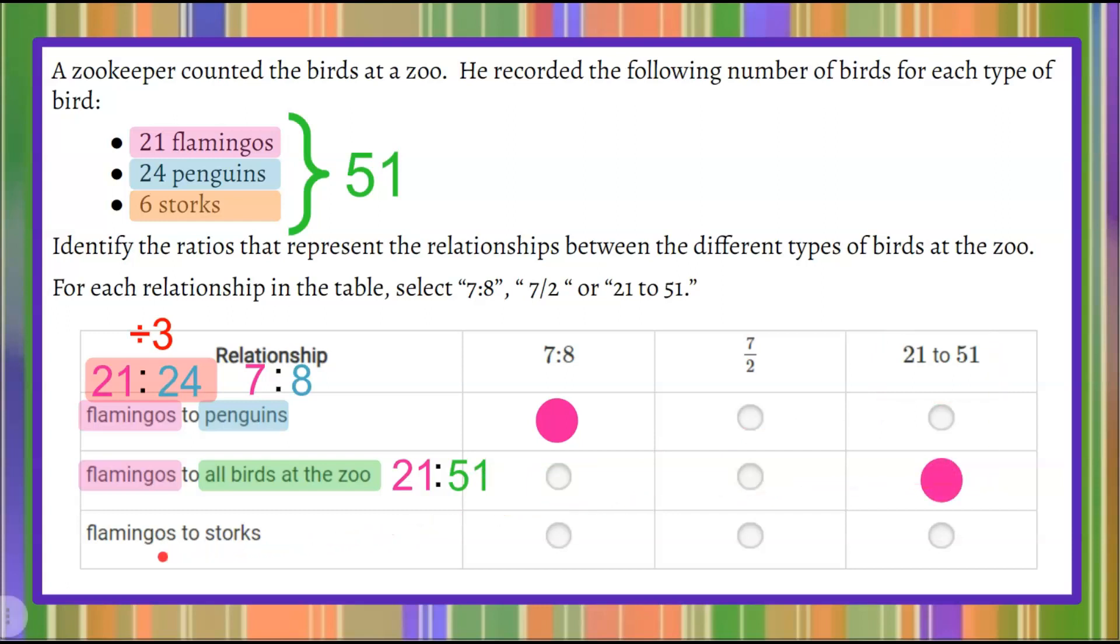And our third one, we have flamingos to storks. We have 21 flamingos and we have 6 storks. So understanding that sometimes the number that follows may be smaller, we have to follow the order in which the ratio was given to us. Noticing that 21 to 6 is not present in this table because these are both, again, divisible by 3. 21 divided by 3 is 7. 6 divided by 3 is 2.